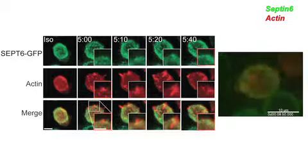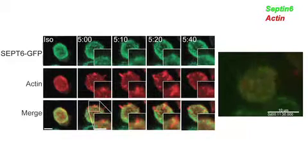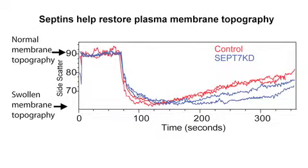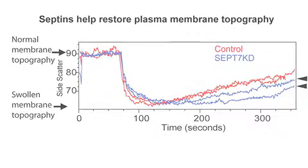Live imaging revealed that both actin and septins localised to membrane protrusions in hypotonic conditions, with actin appearing first before septins accumulated as the membrane retracted back into shape. Using flow cytometry, Gilden et al. found that osmotically stressed T-cells took longer to restore their membranes to a normal topography in the absence of septin filaments.